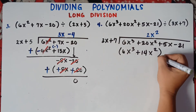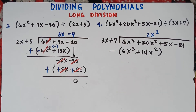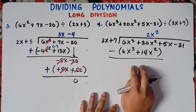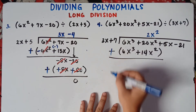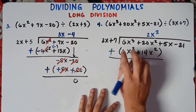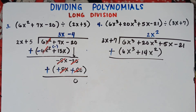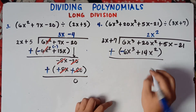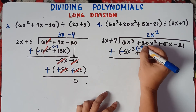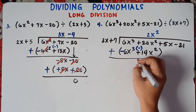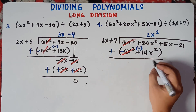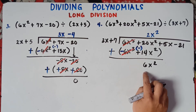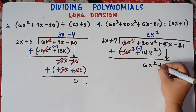Then we subtract — put parentheses, change the sign of the subtrahend, and proceed to addition. Positive 6x cubed becomes negative 6x cubed, and positive 14x squared becomes negative 14x squared. So 6x cubed minus 6x cubed is zero — cancel this out. Then positive 20x squared minus 14x squared equals 6x squared. Bring down positive 5x.